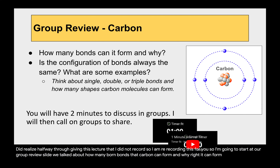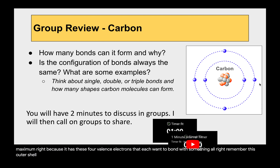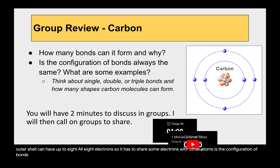Carbon can form four bonds at maximum because it has four valence electrons that each want to bond with something. This outer shell can have up to eight electrons, and carbon wants all eight, so it has to share electrons with other atoms. The configuration of bonds is not always the same.